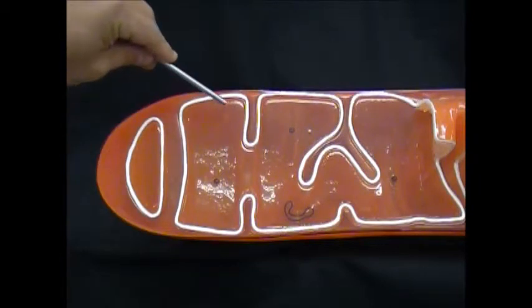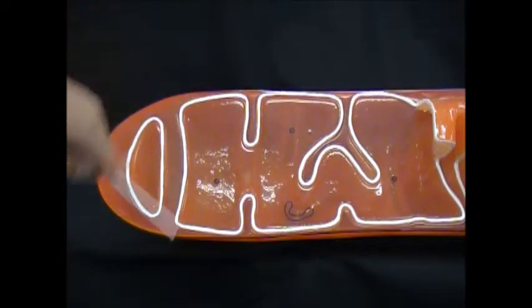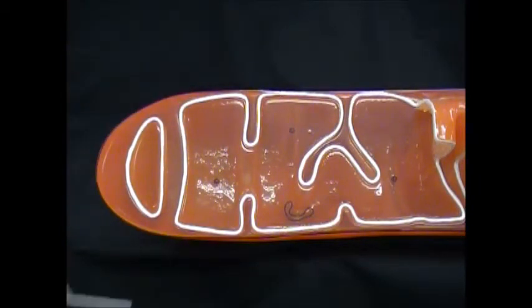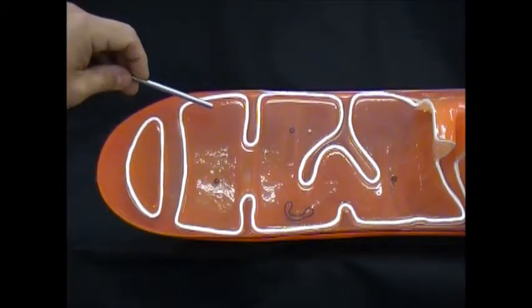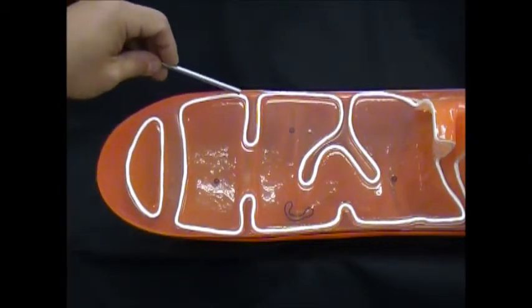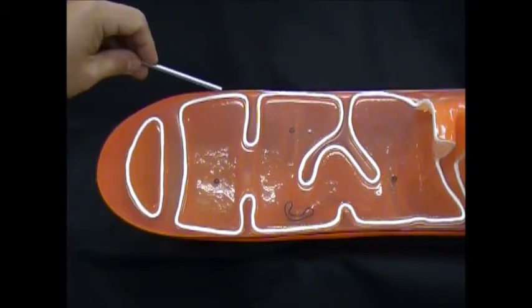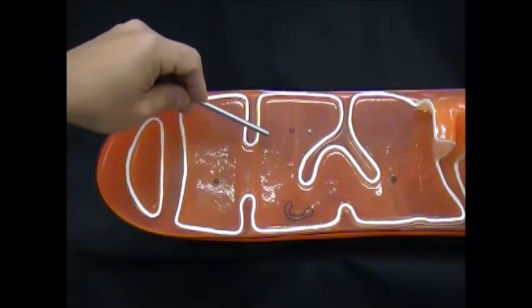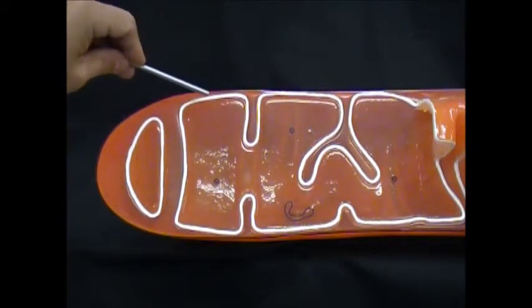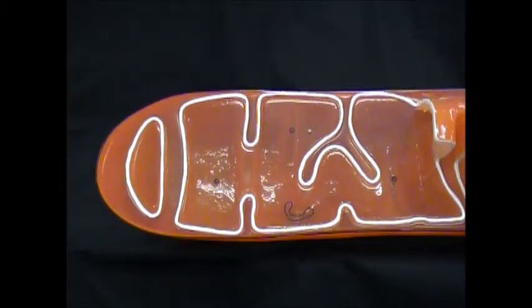They'll pass to the inner membrane space where the Krebs cycle is going to occur, the second step. The third step of cell respiration, the electron transport chain, is going to occur in this inner membrane along the cristae, or the folds of the inner membrane. This is where most of our ATP is going to be generated.